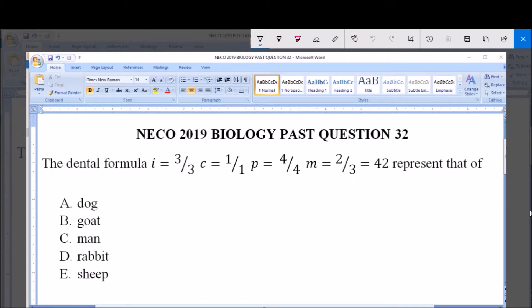The dental formula is I = 3/3, C = 1/1, P = 4/4, M = 2/3 = 42. This represents the teeth of: A. dog, B. goat, C. man, D. rabbit, or E. sheep.